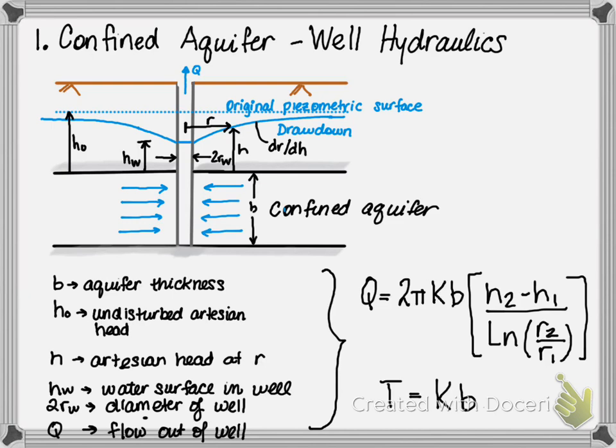And T equals K times B, where K is the hydraulic conductivity and T is the transmissivity. R2 and R1 refer to a distance away from the well, and H2 and H1 is the depth of the water in the drawdown at those points.